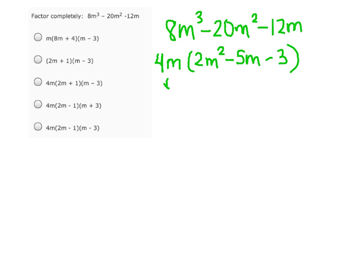We're going to keep our 4m, and somehow we need to factor what's left in the parentheses. We have 2m squared minus 5m minus 3.